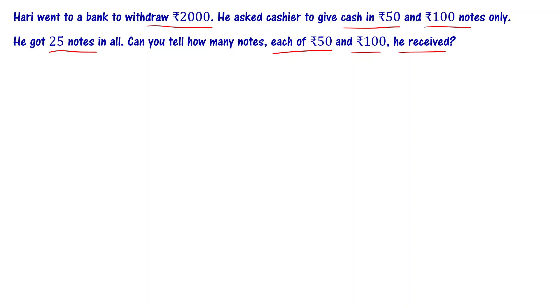So Hari went to a bank. He has withdrawn ₹2000. The cashier gave money in ₹50 and ₹100 notes only, and he got 25 notes total. Now we are asked to find how many ₹50 notes he got and how many ₹100 notes he got.